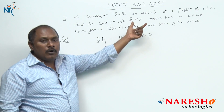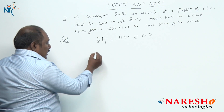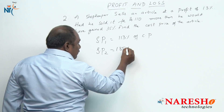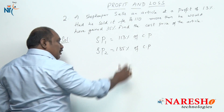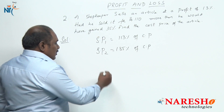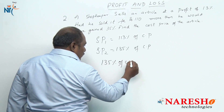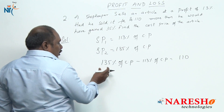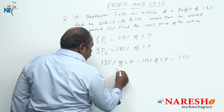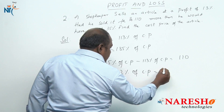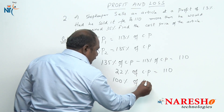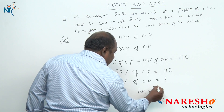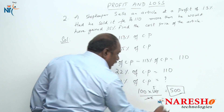Had he sold it for rupees 110 more — a conditional statement — then he would have gained 35 percent. That means after increasing the selling price by 110 rupees, the new selling price should be 135 percent of cost price. So 135 percent minus 113 percent of cost price is 22 percent. Therefore 22 percent of cost price is 110 rupees, giving us a cost price of 500 rupees.